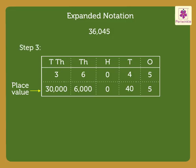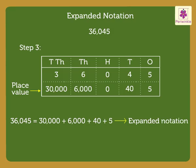Step 3. Write 36,045 as the sum of the place value of its digits. That is, 36,045 is equal to 30,000 plus 6,000 plus 40 plus 5, which is the expanded notation. As there is 0 in the hundreds place, we do not include it in the expanded notation.